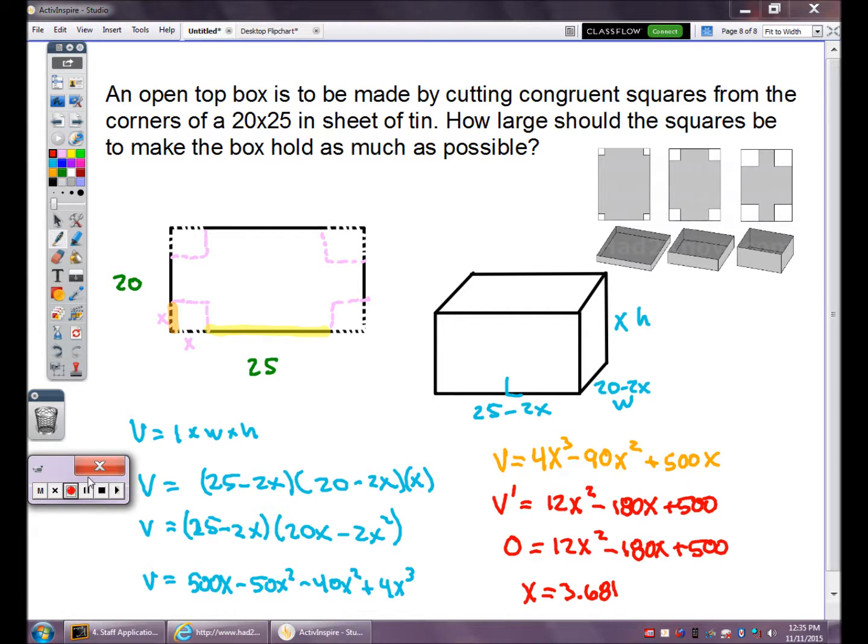Now, I do need to check my endpoints here. The problem is if I take too large of an X, I'm going to have nothing to fold up and no box to make. I can't take an X bigger than 10. If I'm bigger than 10, my dimension is 20, and 10 plus 10 is 20. I'm going to cut away and throw away the entire box. So 10 would be an endpoint. Obviously, my max is not going to occur at that endpoint of 10 because my whole box is disappearing. My other endpoint is zero. If I don't cut out any corner, I don't have any tabs to fold up. So my answer is 3.681.